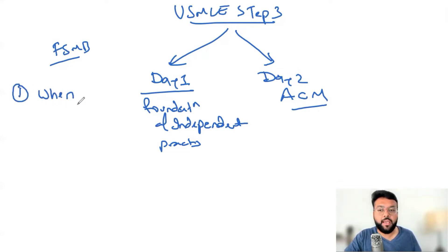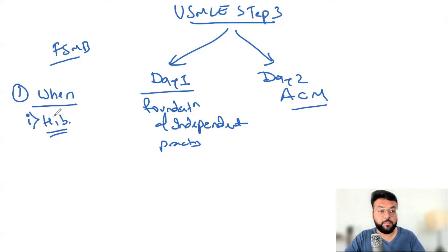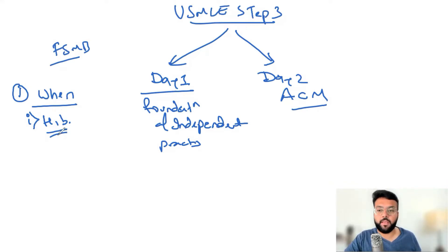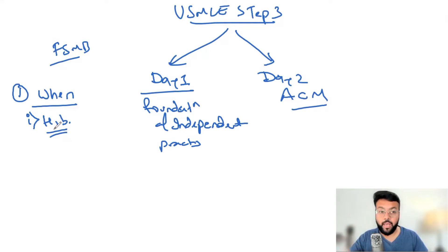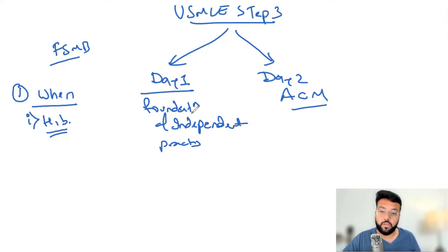A frequently asked question is when you should take the Step 3 examination. Usually, people — especially IMGs who want an H1B visa — give Step 3 before the match results, because you can only get an H1B visa with a state license, which requires Step 3. It's good to have your results by end of February. If you're already a citizen or green card holder with no visa concerns, you can take it during your intern year of residency.